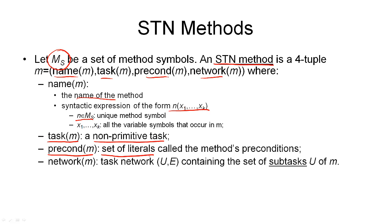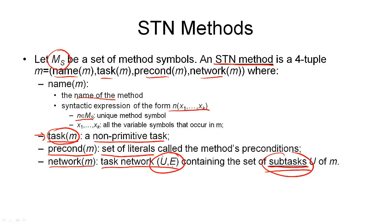The fourth and final component is the network of the method, which is simply a task network consisting of tasks and edges that are ordering constraints. The tasks in the set U are called the subtasks of this method. You can think of this method as breaking down the task — the second component — into the subtasks that make up the network. The task describes what we accomplish; the subtasks describe how we accomplish it.